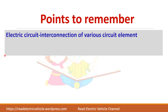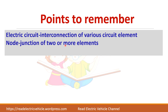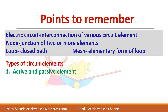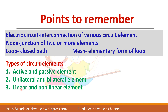To summarize: an electric circuit is the interconnection of various elements; a node is a junction of two or more elements; a loop is a closed path; and a mesh is the elementary form of a loop. There are different types of circuit elements: active and passive, unilateral and bilateral, linear and non-linear, and lumped and distributed.